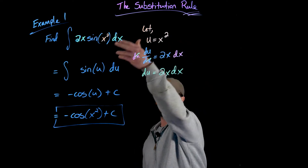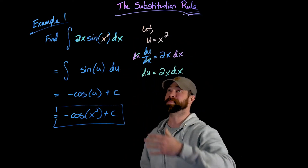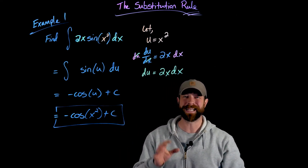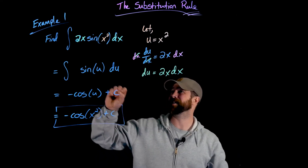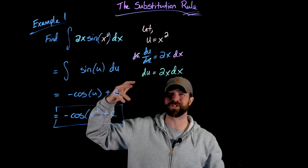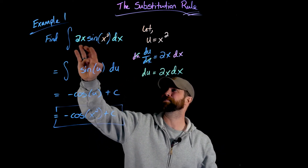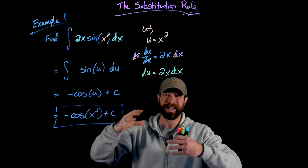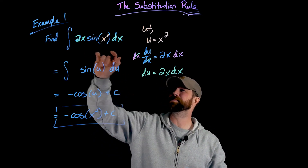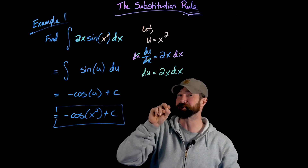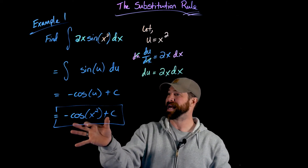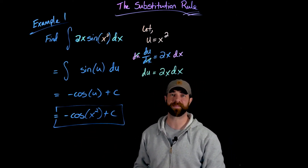Once you've made your substitution, the game is: can I get rid of dx and all the other stuff making the integral difficult? This was a difficult integral because it had a polynomial factor, 2x, multiplied by this sine of x squared function. But through this move — translating everything into an integral with respect to u — I now have a very simple integral, and can easily get back to the original expression in terms of x.